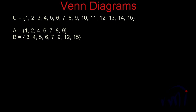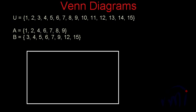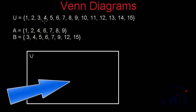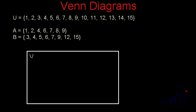Now how do we represent this in a Venn diagram? To represent the universal set we first draw a rectangle. Inside the rectangle, in the top left corner, we write the name of the set, which is capital U. Now I have to represent set A and set B, and as you can see we have a few common elements — 4, 6, 7, and 9 — which are common in both sets.